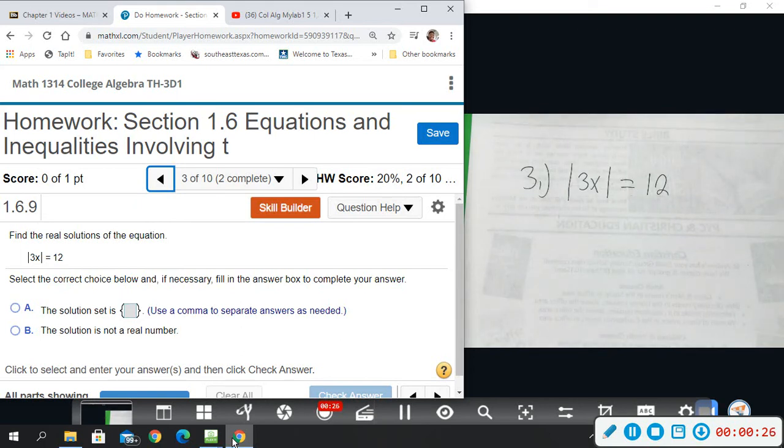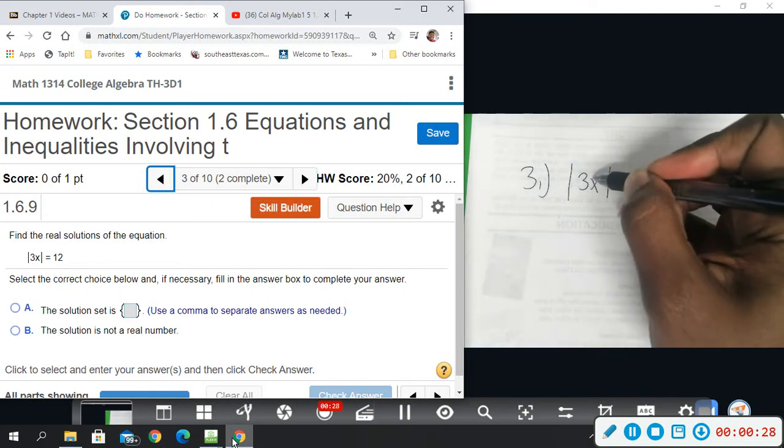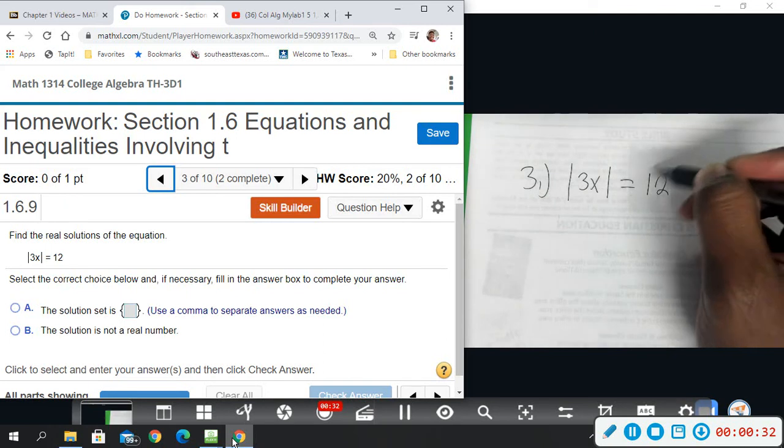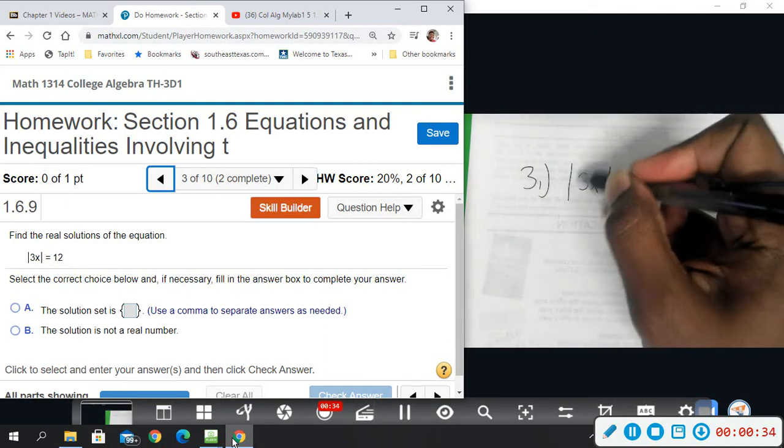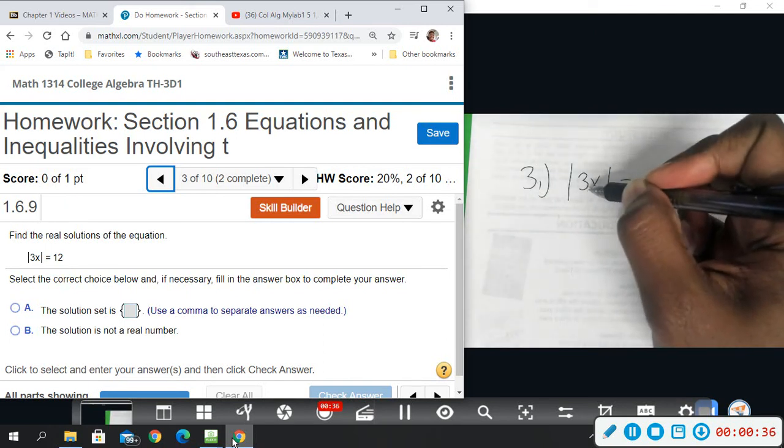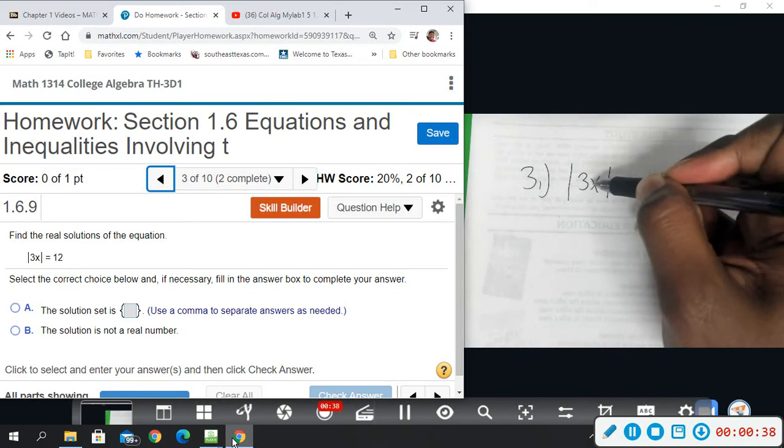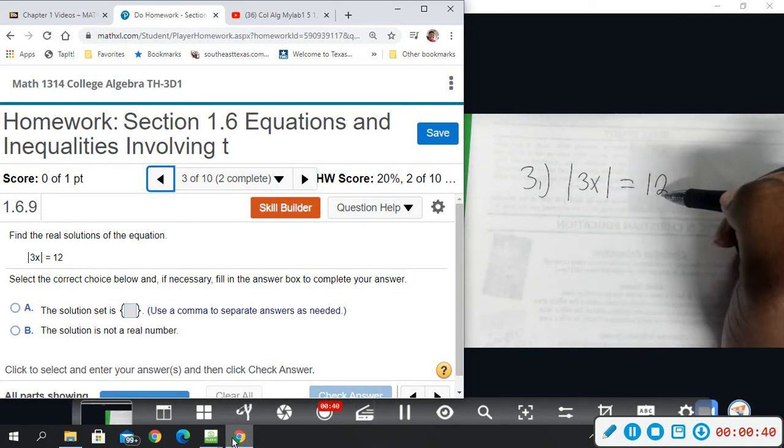You have to be mindful that whatever this is could equal positive 12, and when you take the absolute value of it, it shows you positive. It could also come out to be negative 12, and when you take the absolute value of it, it still shows you positive. So that's what we have to do. Must remember that.